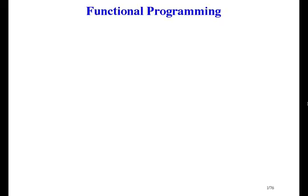The main kind of programming done in the world by far is imperative programming, and that's what almost all of this course is about. But in this one section I want to show you another kind of programming called functional programming. Think of it as what you get if you take away assignment, take away dependent composition, and add functions. Imperative means commanding, and an imperative program commands a computer to change state.